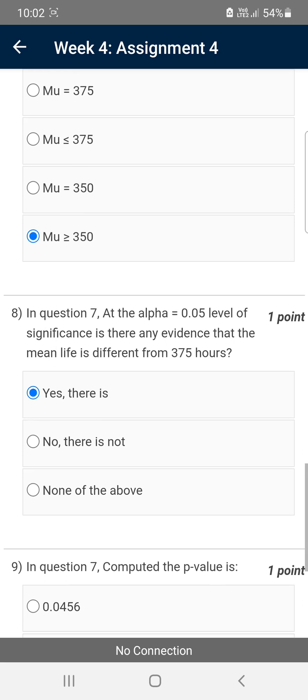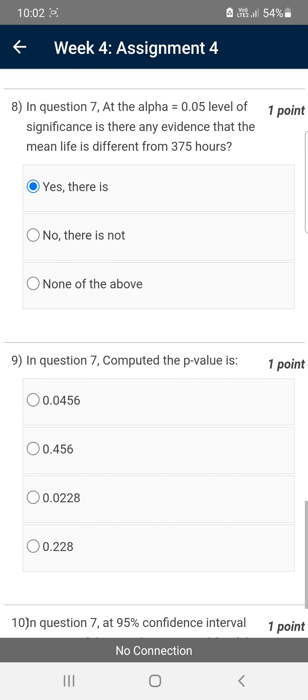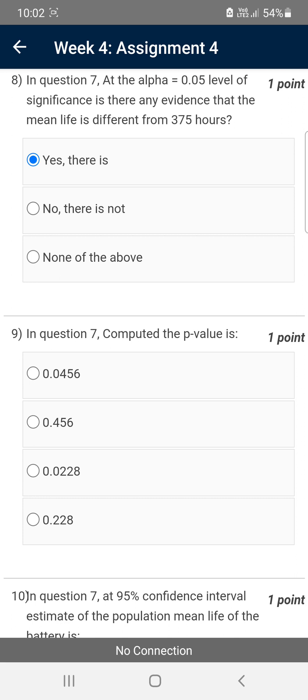For the ninth question, again based on the seventh one, actually from 7 to 10 based on the same question. In question seven, compute the p-value. For the ninth question, the probable solution is the first option: 0.0456.